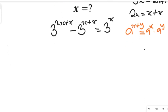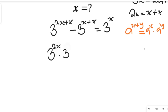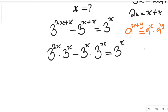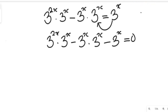So if we apply that, we are going to have 3 to the power of 2x multiplied by 3 to the power of x, minus 3 to the power of x multiplied by 3 to the power of x, and that will be equal to 3 to the power of x. Now if we bring 3 to the power of x over to the left side it becomes negative, so we have 3 to the power of 2x times 3 to the power of x, minus 3 to the power of x times 3 to the power of x, minus 3 to the power of x, equal to 0.